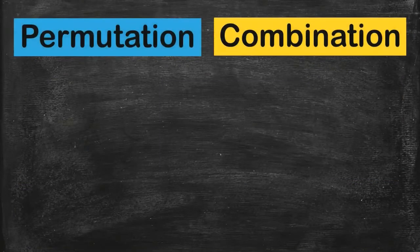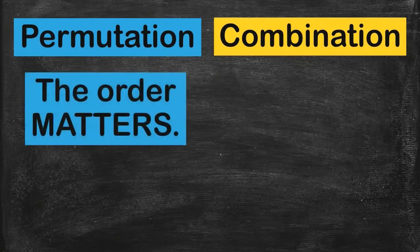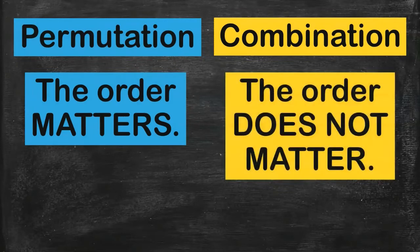Now, my question is, what's the difference between them? In a permutation, the order matters — the order is important. In a combination, it is not important; the order does not matter.